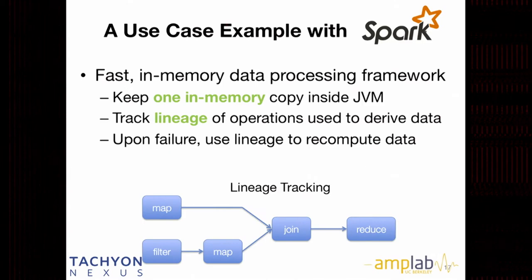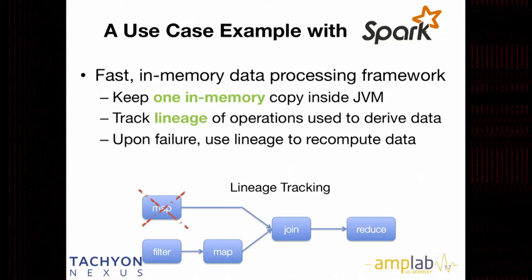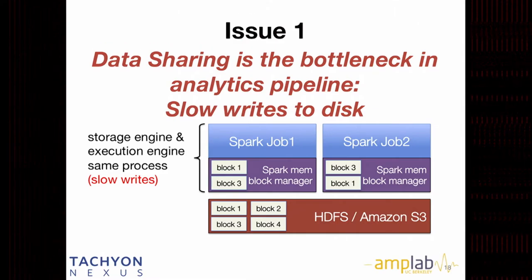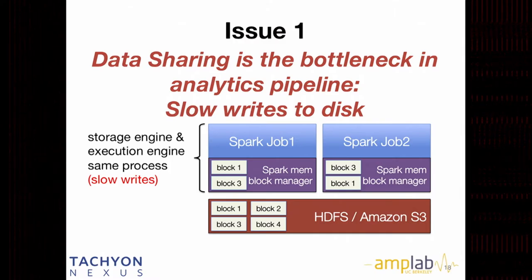Here's one example showcased with Spark. Spark has been widely deployed in many companies, and you know how it works. But there are still issues not covered by Spark — it's a computation engine. In many companies with complex data processing pipelines, you have to do data sharing between different Spark jobs or even jobs with other frameworks. In this case, when doing data sharing you have to go through an external storage system — for example, a Spark job on the left writes something to HDFS or Amazon S3.